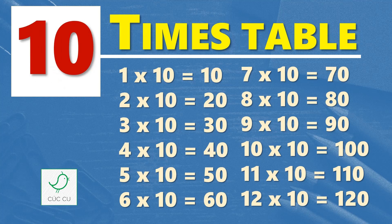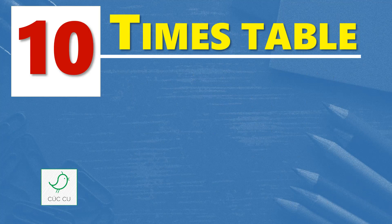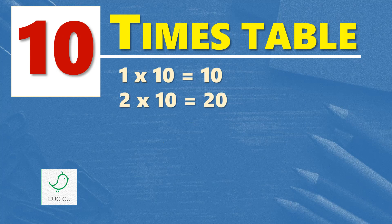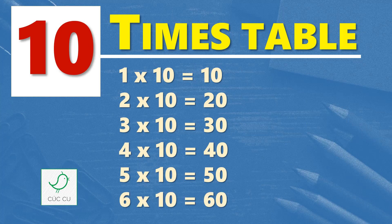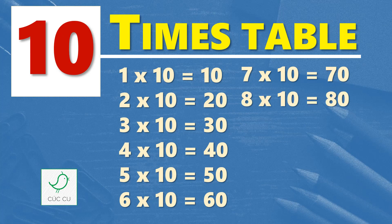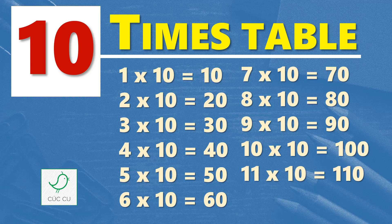Multiplication table of ten. Ten times table. One times ten is ten, two times ten is twenty, three times ten is thirty, four times ten is forty, five times ten is fifty, six times ten is sixty, seven times ten is seventy, eight times ten is eighty, nine times ten is ninety, ten times ten is one hundred, eleven times ten is one hundred and ten, twelve times ten is one hundred and twenty.